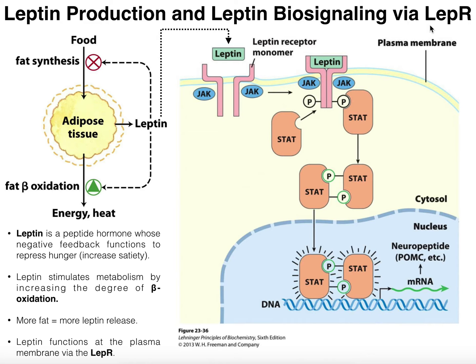What is leptin? Leptin is a peptide hormone that is released by fat cells. This is adipose tissue right here in this picture, and the individual cells are called adipocytes. These cells are going to secrete leptin into the blood, and leptin is going to travel to various cell types and induce certain biological effects.